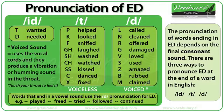Now we know the difference between voiced and voiceless sounds, we can look at the rules for the correct pronunciation of ED. If the last letter of the word ends in a T or D — like 'want' or 'need' — then the ED is pronounced as an 'id' sound: wanted, needed. The ED adds an extra syllable to the word. 'Want' is one syllable; 'wanted' is two syllables. 'Need' is one syllable; 'needed' is two syllables.